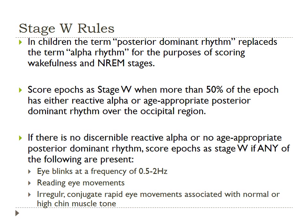To score stage wake, replace the term alpha rhythm with posterior dominant rhythm. In children, posterior dominant rhythm replaces alpha rhythm for the purposes of scoring wakefulness and non-REM stages. Score stage W any time you see 50% or more of the posterior dominant rhythm in an epoch. If the posterior dominant rhythm is not present, score stage W if any of the following are present: eye blinks, reading eye movements, or irregular rapid eye movements associated with normal or high chin muscle tone.